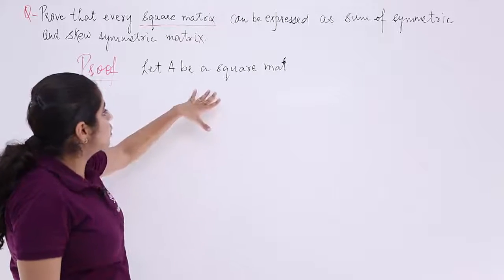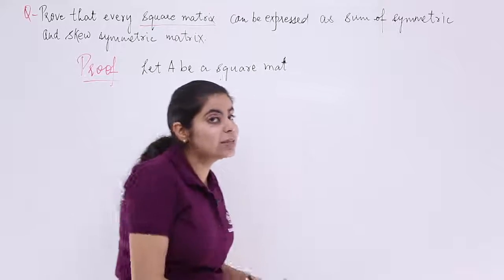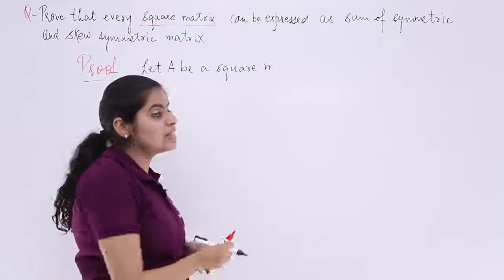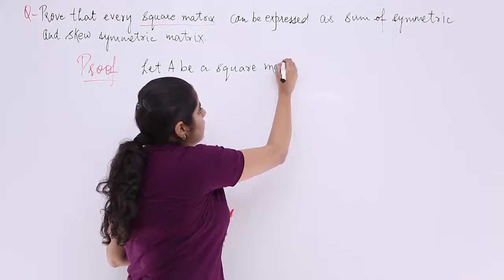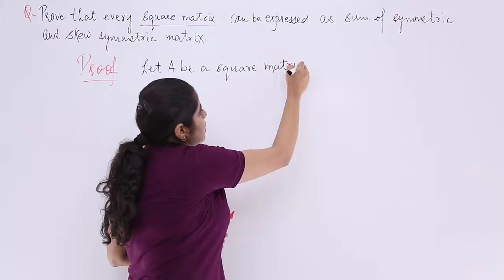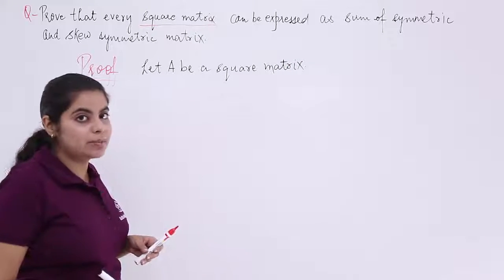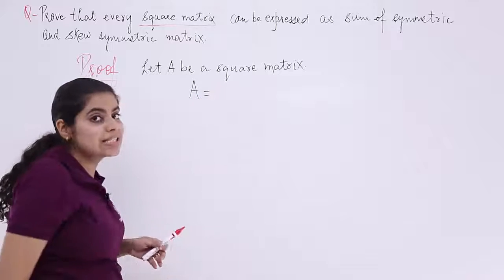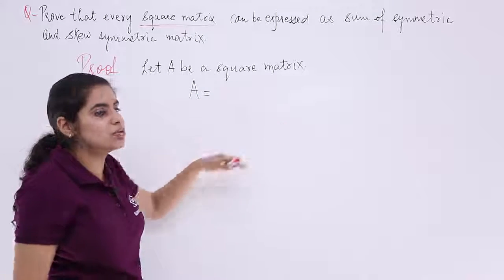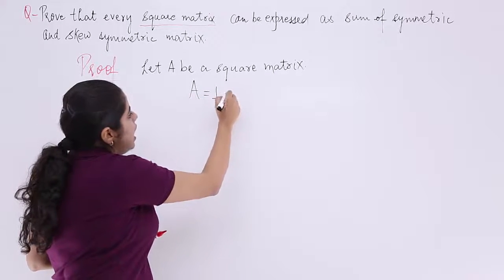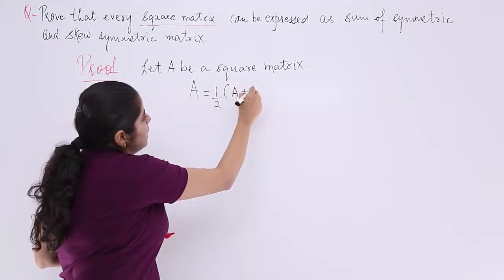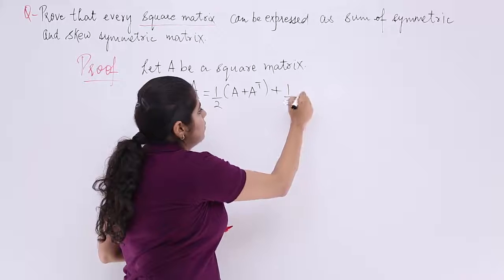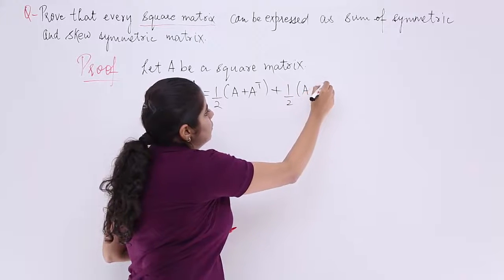I need to find out whether this square matrix can be expressed as the sum of two matrices, one being symmetric and the other being skew symmetric. Let A be a square matrix. Then A can be written as the sum: half into (A + Aᵀ) plus half into (A − Aᵀ).